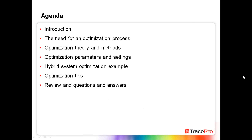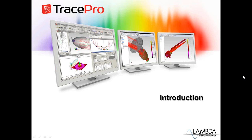The agenda for today's webinar: we'll start with a quick introduction to optimization, talk about the need for an optimization process, look at some theory and methods, then get into parameters and settings — which will be most of the content today. We'll look at a hybrid system optimization example, discuss some optimization tips, and then finish with a review and questions and answers.